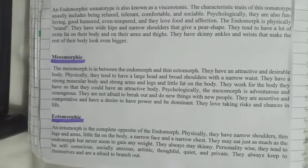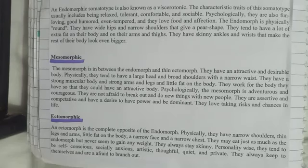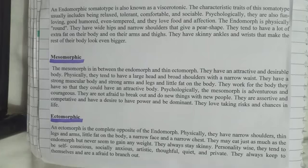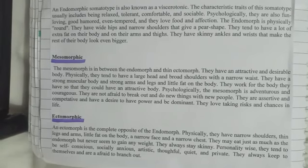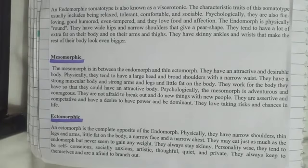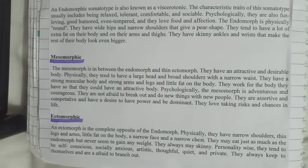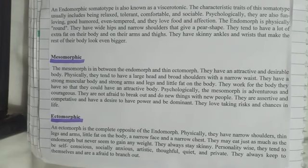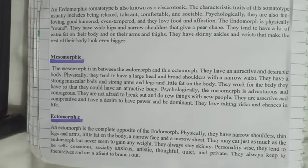An ectomorph is the complete opposite of the endomorph. Physically, they have narrow shoulders, thin legs and arms, little fat on the body, and a narrow face and narrow chest. They may eat just as much as the endomorph but never seem to gain weight, and always stay skinny. Personality-wise, they tend to be self-conscious, socially anxious, artistic, thoughtful, quiet and private. They always keep to themselves and are afraid to branch out.